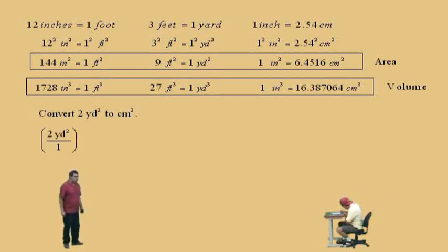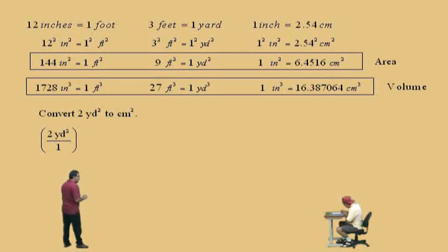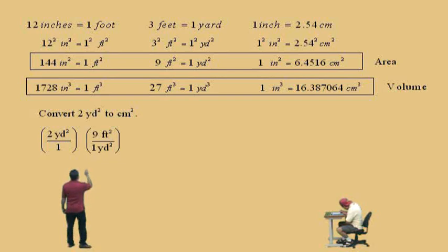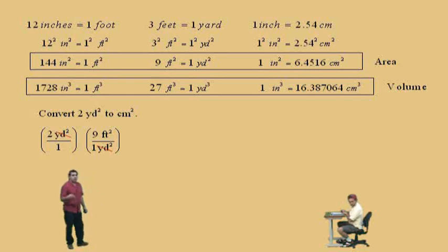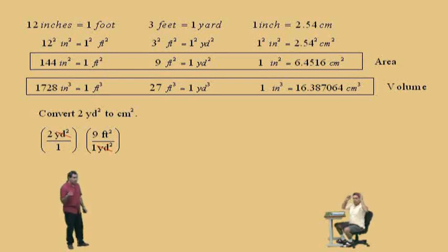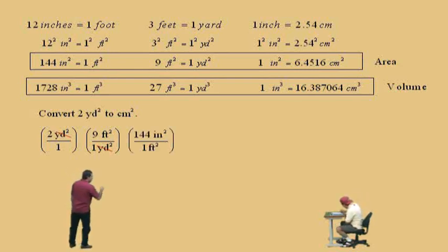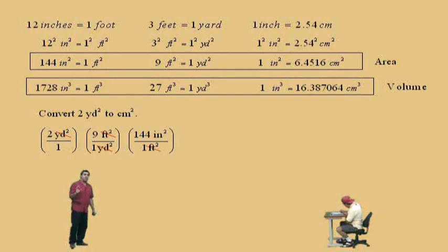We're going to convert the yards squared to feet squared first. Notice here, 9 feet squared is equal to 1 yard squared, so there's our conversion factor. The yards squared cancel out, leaving us with feet squared. But remember, we don't want feet squared, we want centimeters squared. So we're going to go from feet squared to inches squared, because then we can go from inches squared to centimeters squared. We put feet squared on the bottom, inches squared on the top, so that the feet squared will cancel, leaving us with just inches squared.